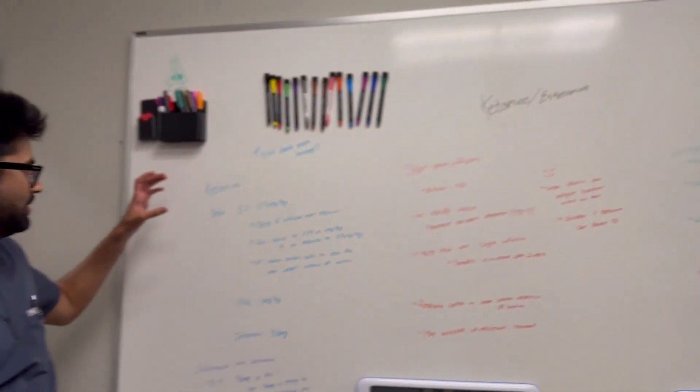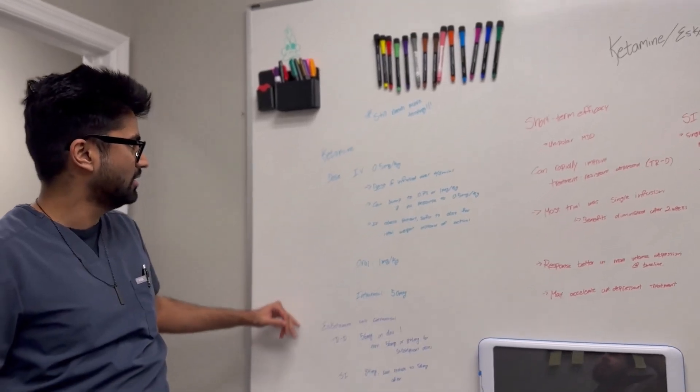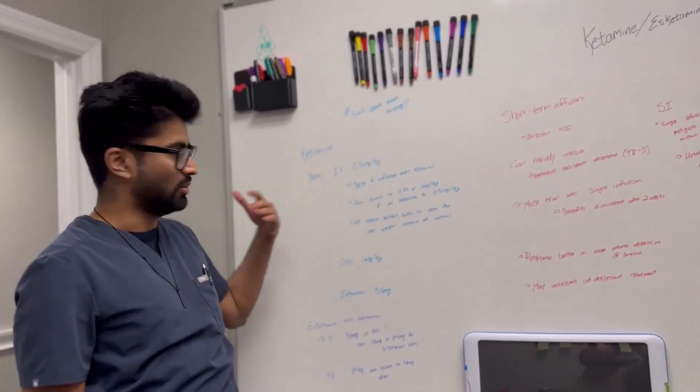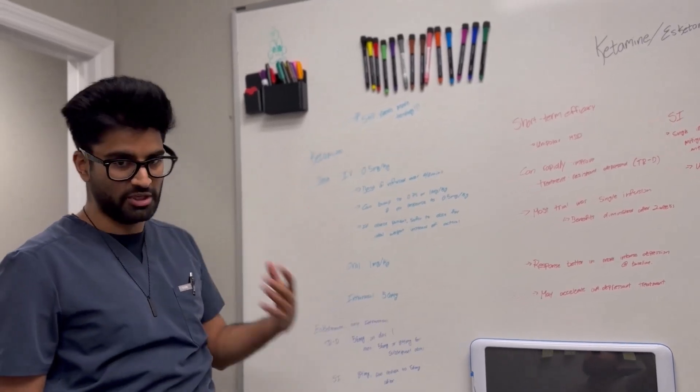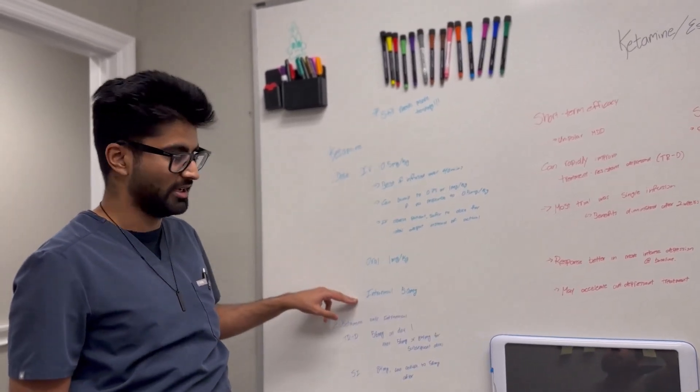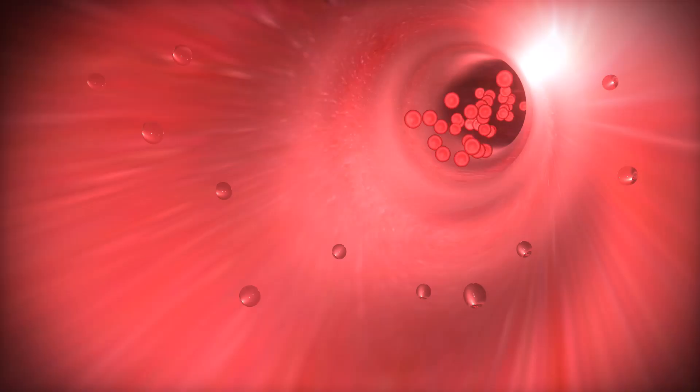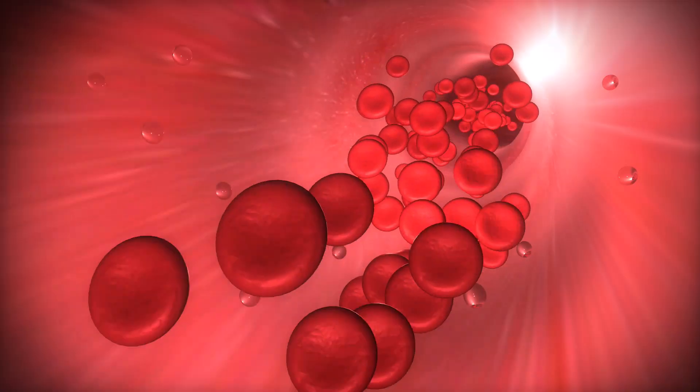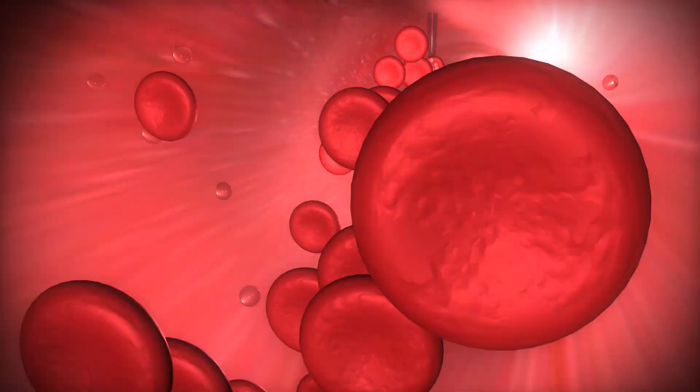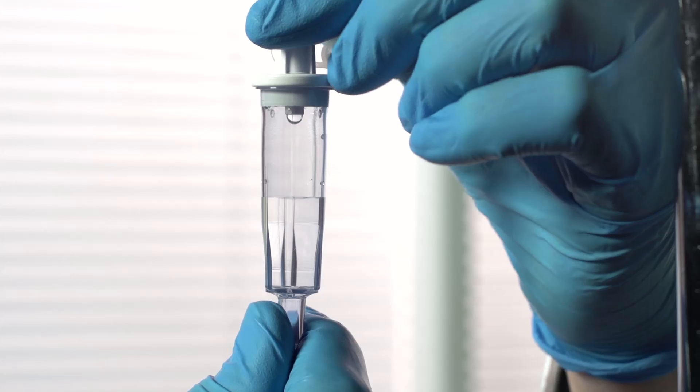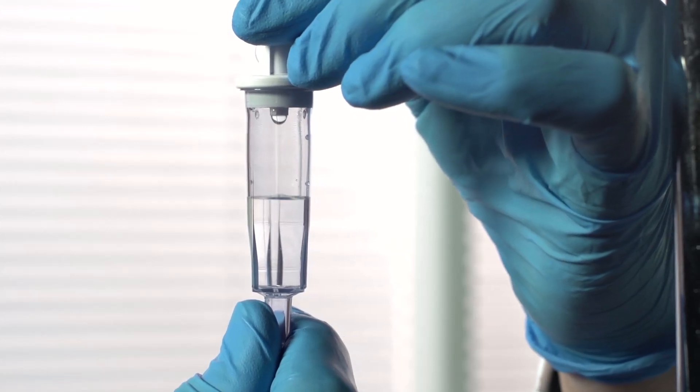So we'll start off with ketamine and esketamine. So normally what happens with the dosing? There's three forms with ketamine how you can administer it: IV, oral, or intranasal. So IV typically what they want to do is 0.5 milligrams per kilogram. That's pretty much the max that you want to give usually. And then what they do is you want to infuse it over 40 minutes. And that's when they saw the best efficacy.